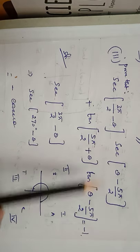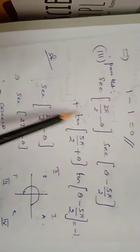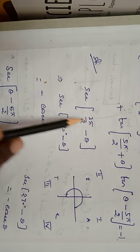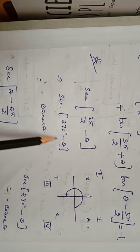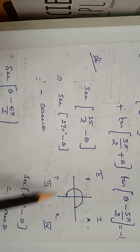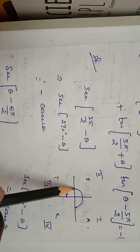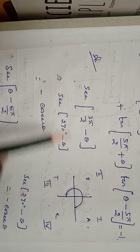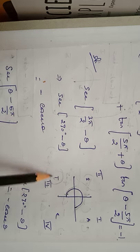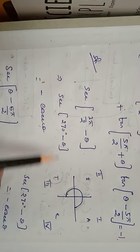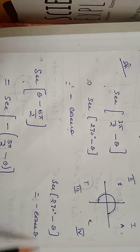To prove that the LHS equals −1, first take sec(3π/2 − θ). Here 3π/2 means 270°, so we have sec(270° − θ). Since 270° places us in the third quadrant, tan is positive and remaining ratios are negative. Also, at 90° and 270° the ratio changes: secant becomes cosecant. Therefore, sec(270° − θ) = −cosec θ.